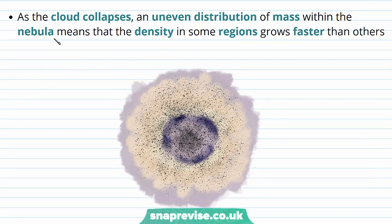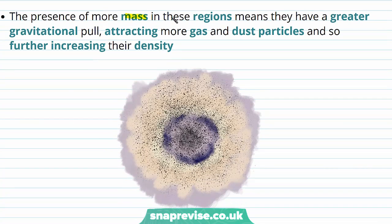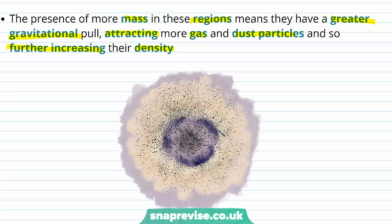The dust cloud isn't uniform — it has some regions which have a larger mass than others. As the cloud collapses, an uneven distribution of mass within the nebula means that the density in some regions will grow faster than others. In this image you can see that these areas are darker because they contain more dust particles, and therefore have a higher density. The presence of more mass in these regions means they have a greater gravitational pull and attract more gas and dust particles, which further increases their density. Consider this region here, which has a higher density than the areas around it — it's going to attract more and more dust particles, which will in turn increase the density further.